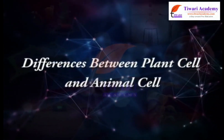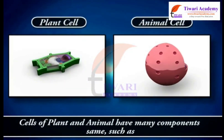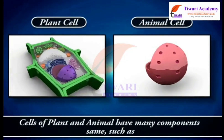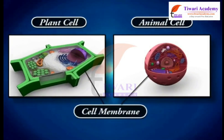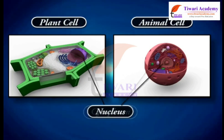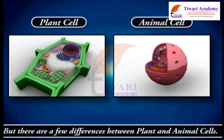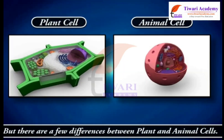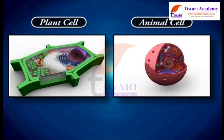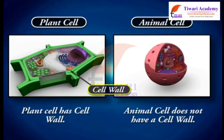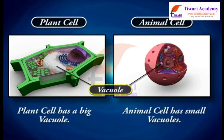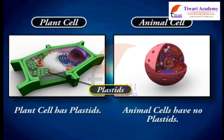The differences between plant cells and animal cells: Plant cells have a cell wall, while animal cells do not. Plant cells have one big vacuole, while animal cells have small vacuoles. Plant cells have plastids, but animal cells have no plastids.